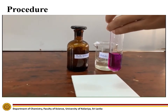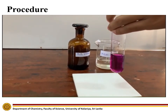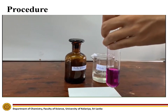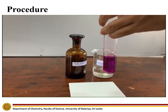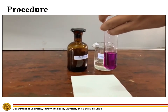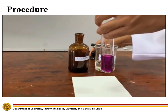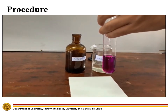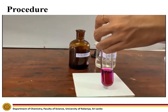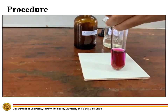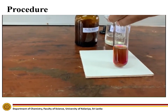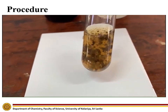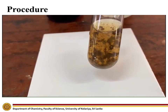As the third step of this experiment, basify a dilute permanganate solution using a few drops of dilute sodium hydroxide. After that, add a few drops of hydrogen peroxide solution and observe the color change. A dark brown color precipitate can now be observed. This resembles the +4 oxidation state of Manganese.